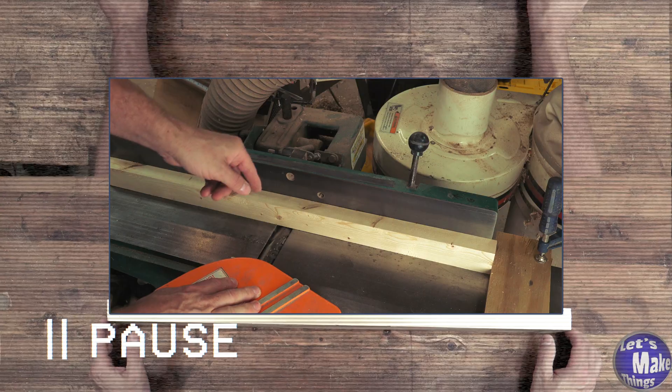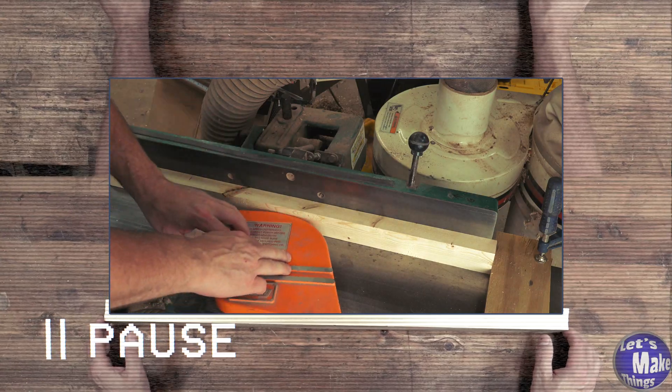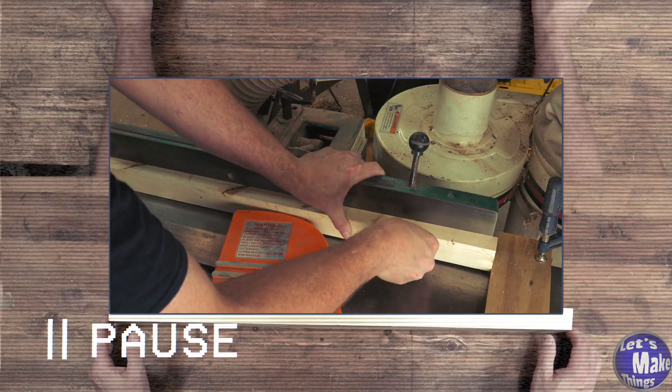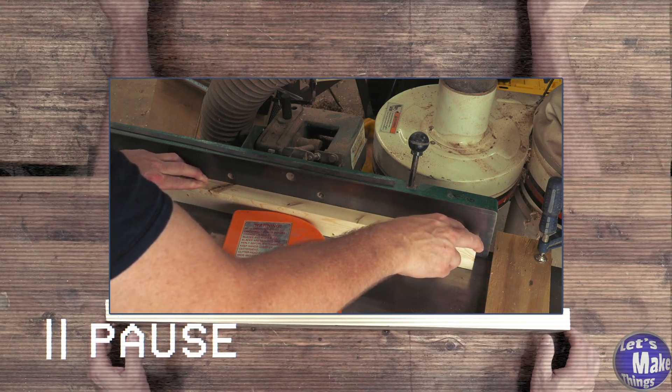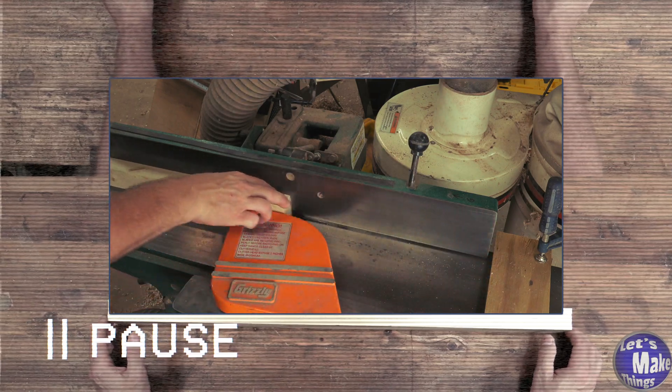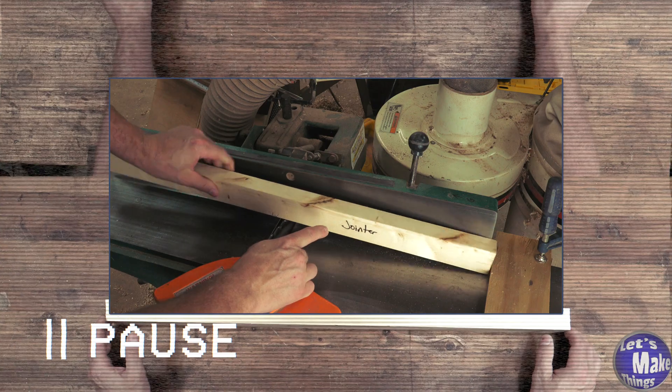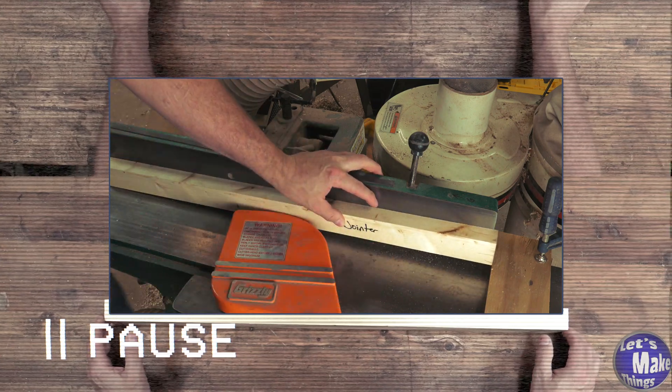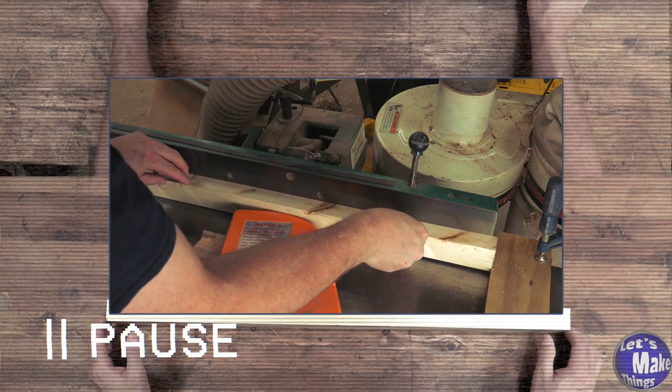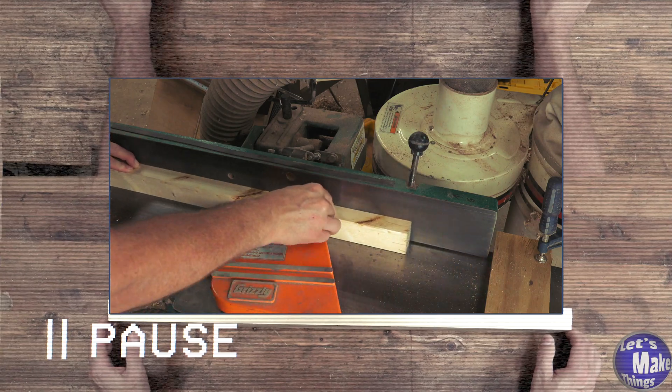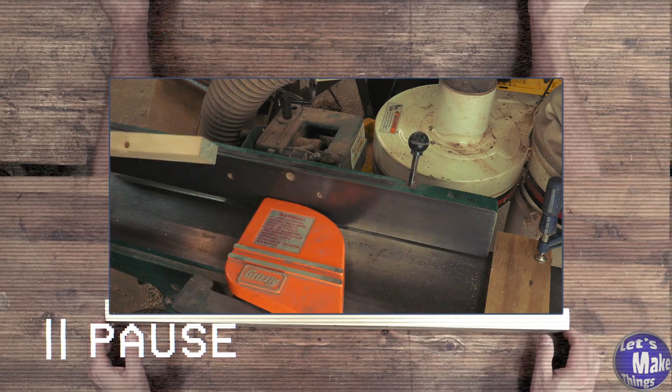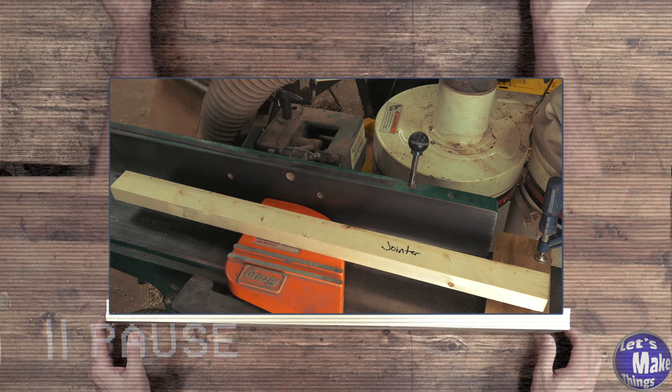When I'm done, I'll flip it around and do the opposite side. This side is done. Now I'm going to do the opposite side the same exact way. And that is the jointer method.